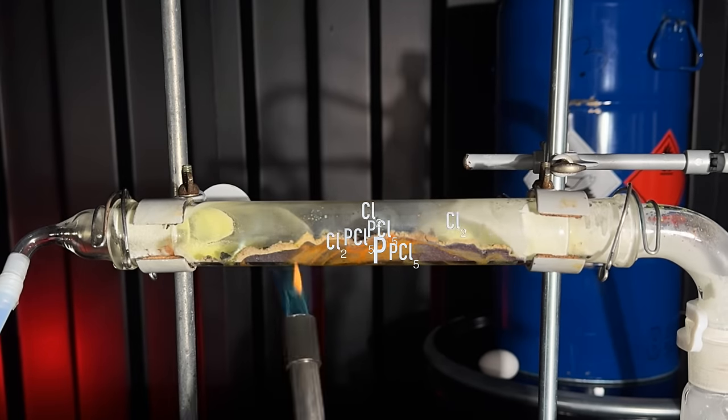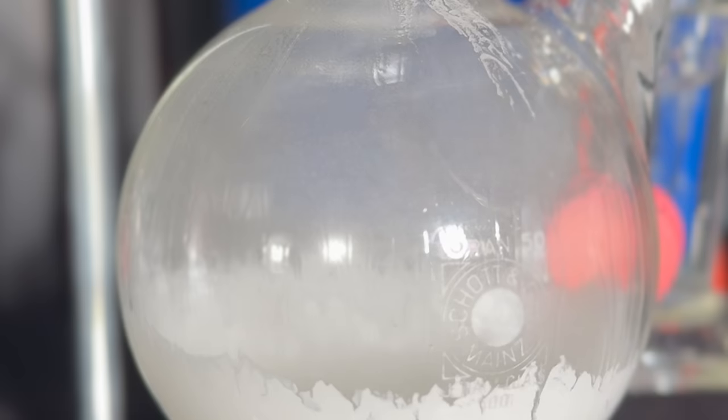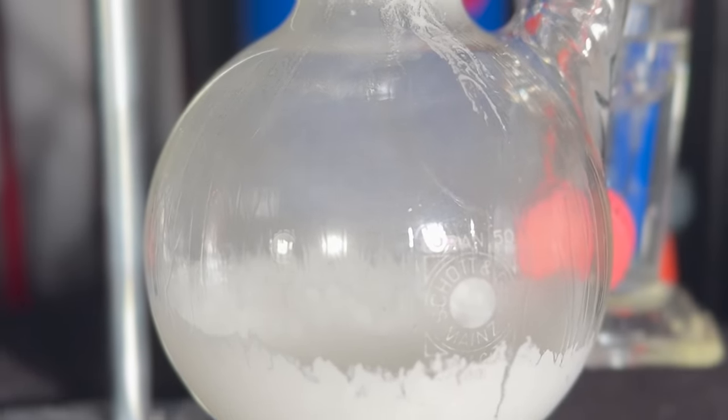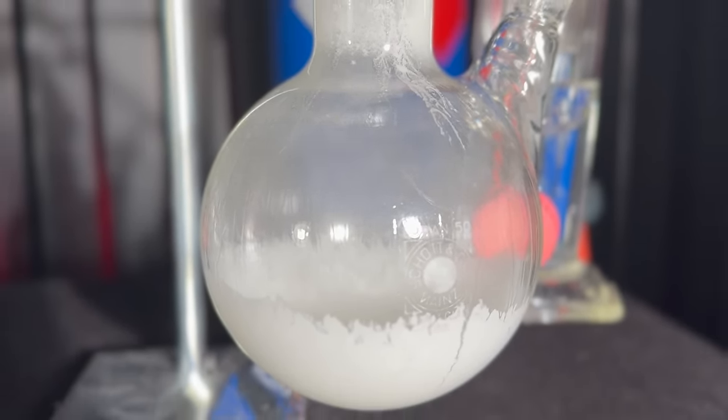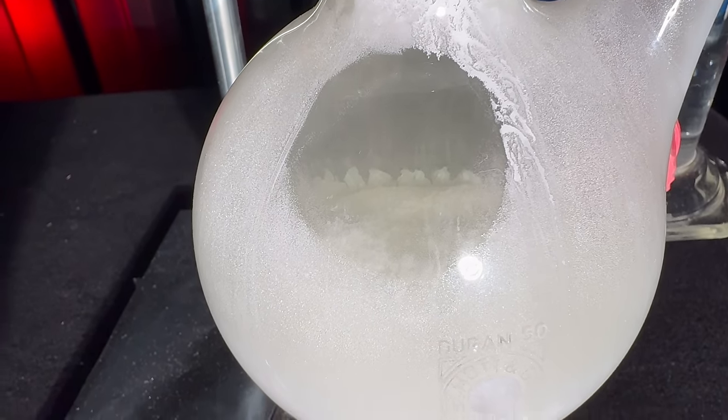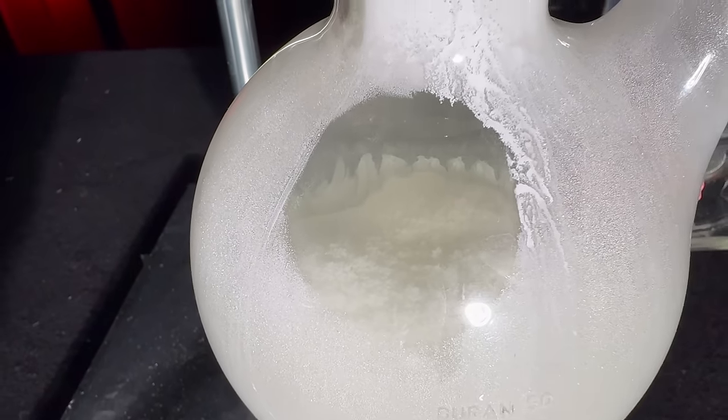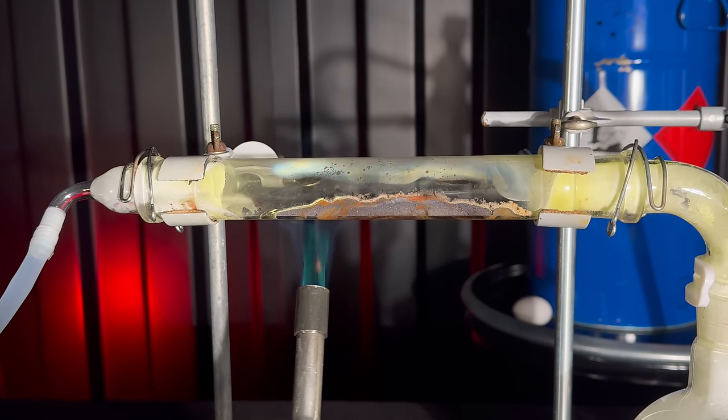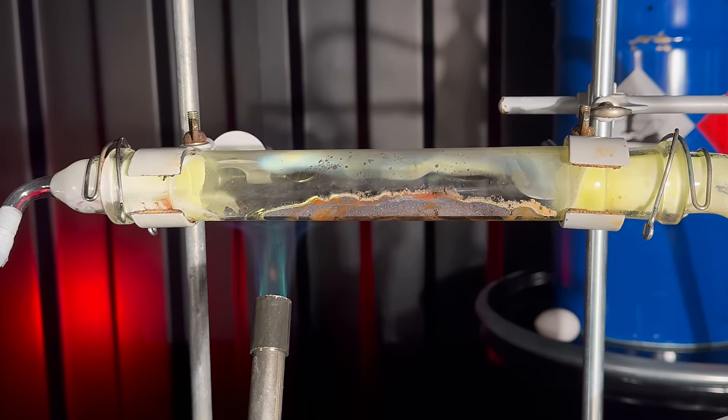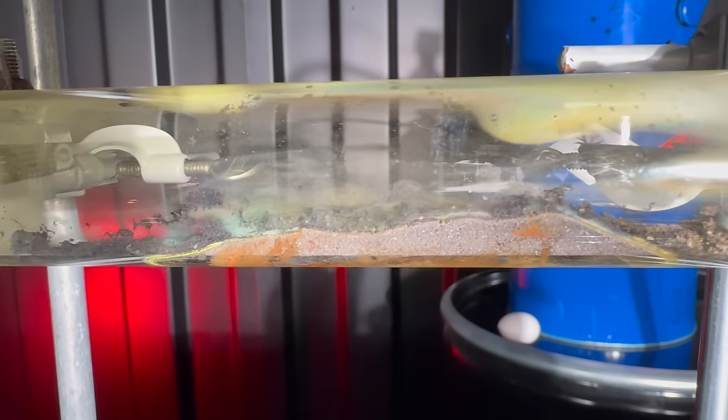The reaction needs to be heated continuously. PCl5 covers the surface of the phosphorus and if I don't sublime it off, the reaction will not continue. The resulting product is a white powder with a hint of yellow. I ended up having to heat the tube for more than half an hour, which was longer than expected.